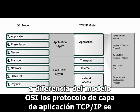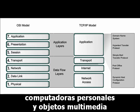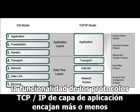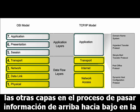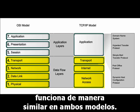Unlike the OSI model, the TCP/IP application layer protocols were developed before the emergence of personal computers, graphical user interfaces, and multimedia objects. This is the reason for the additional layers in the OSI model. The functionality of the TCP/IP application layer protocols fits roughly into the framework of the top three layers of the OSI model. The other layers in the process of passing information up and down the hierarchy work similarly in both models.